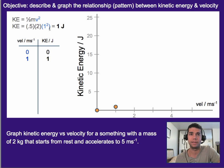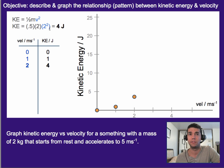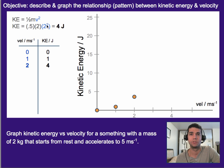If we plug in a velocity of one, we get one joule. At a velocity of two, it doesn't just double — it actually quadruples the kinetic energy, because of the squared term. At three we get nine joules, at four we get sixteen, and at five we get twenty-five joules.